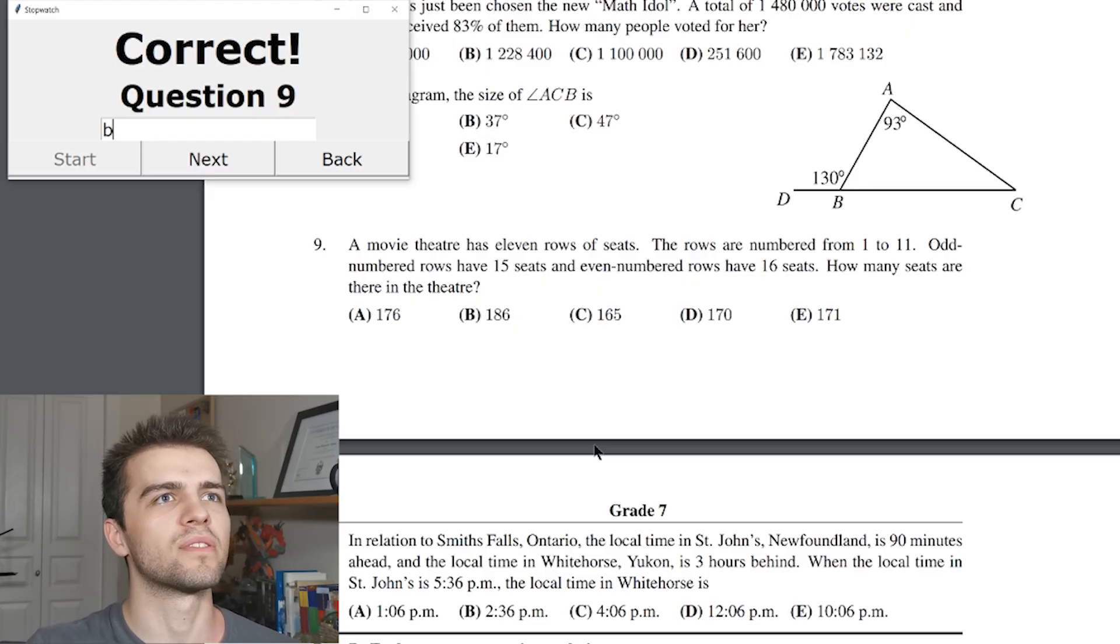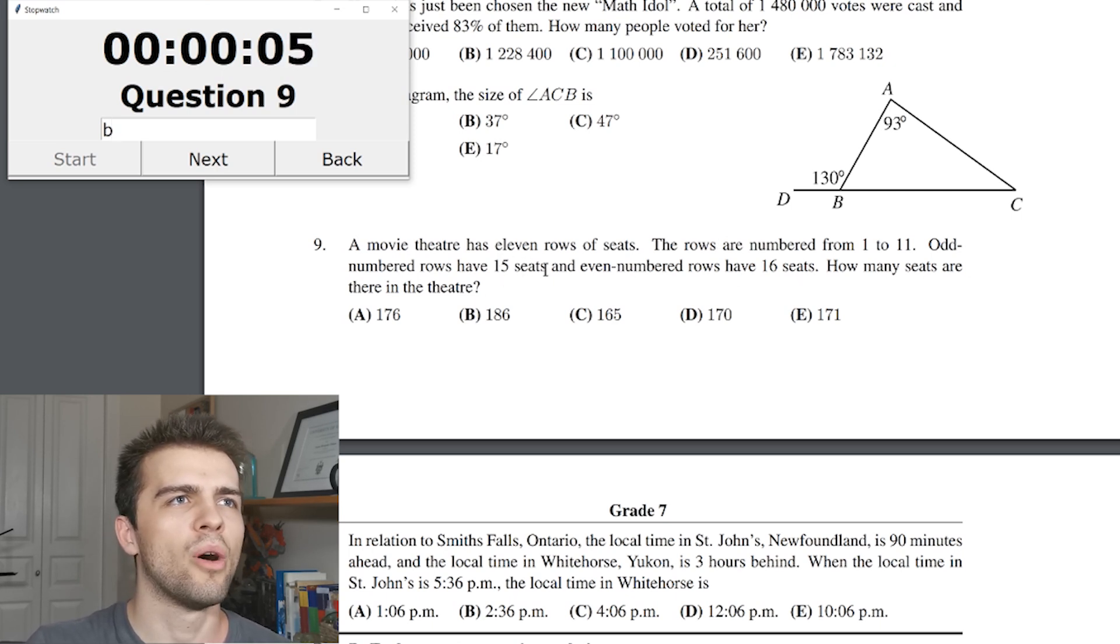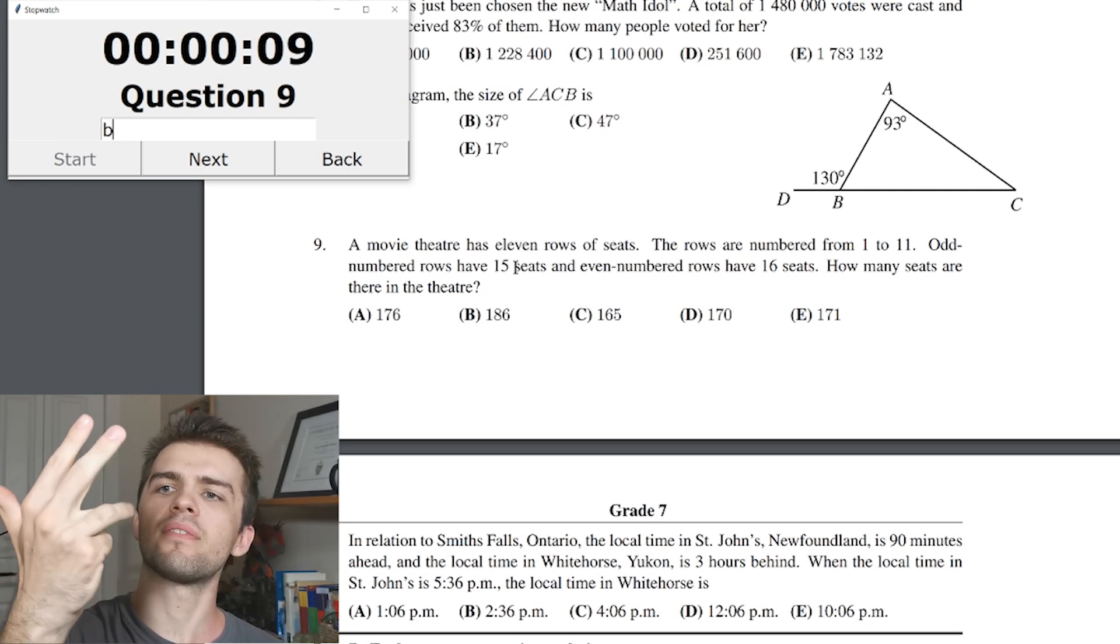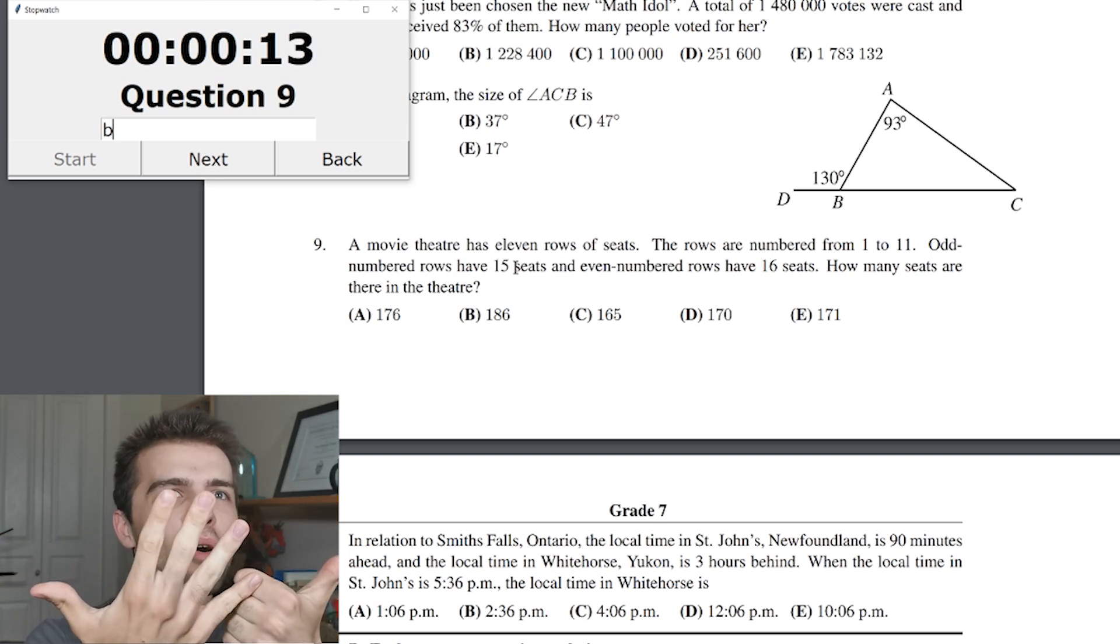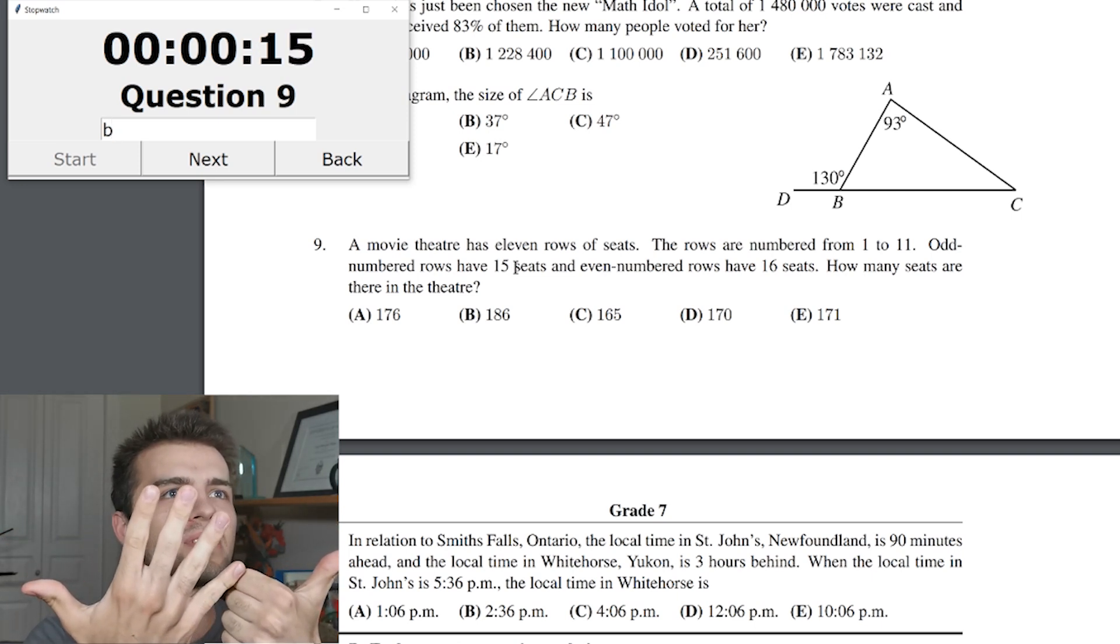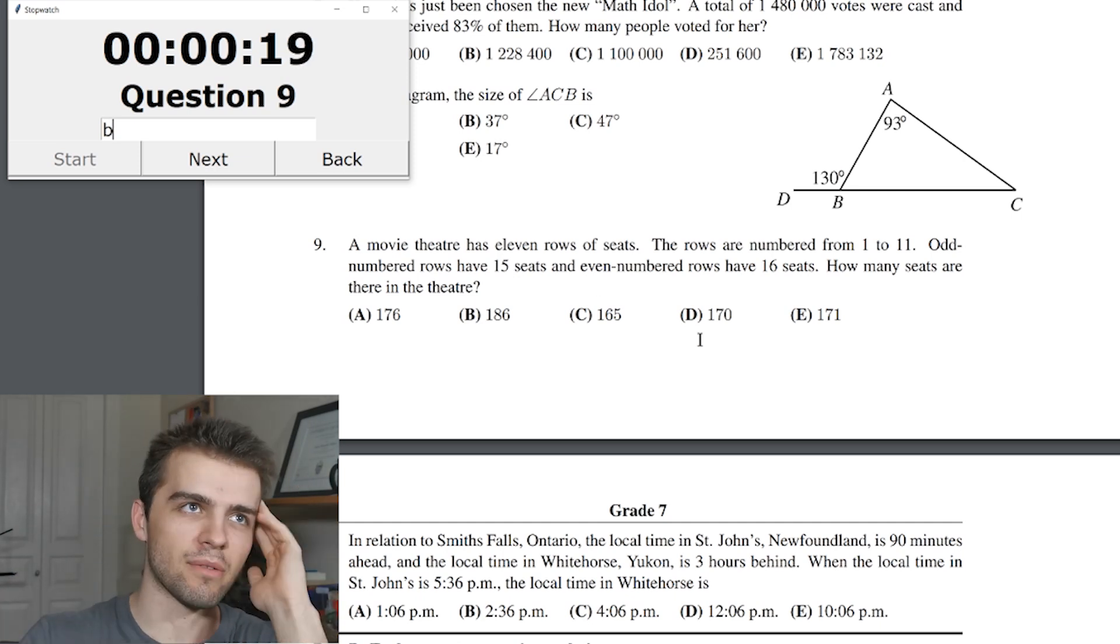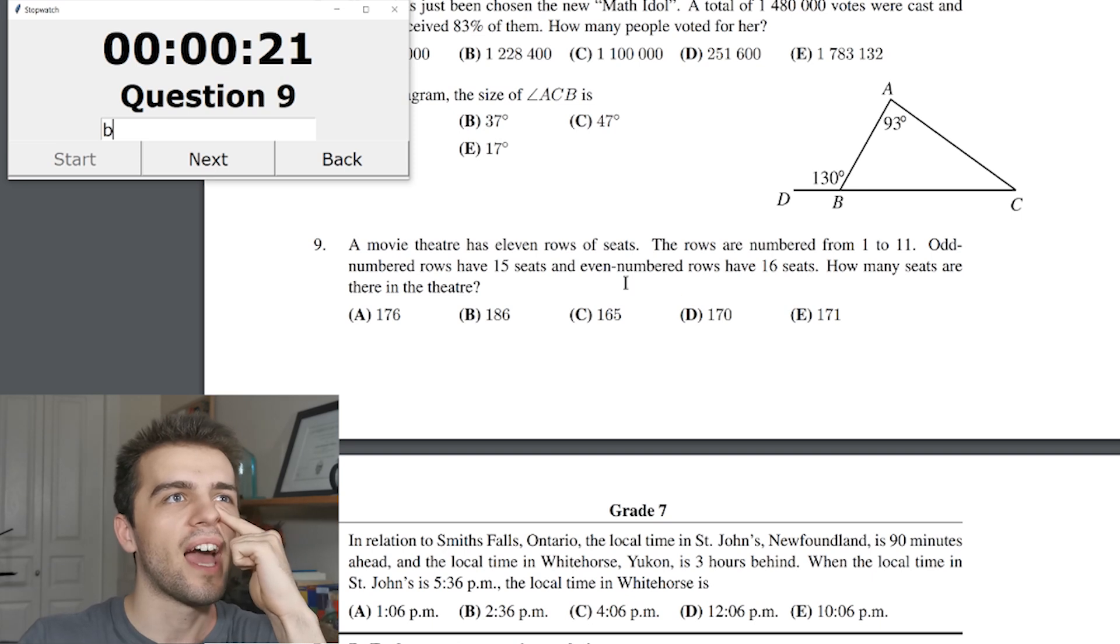A movie theater has 11 rows of seats. The seats are numbered 1 to 11. Odd number rows have 15 seats and even have 16. How many seats are there in the theater? Well, okay, odd number rows, 1, 2, 11, 1, 3, 5, 7, 9, 11. We have 6 rows times 15. 6 times 15, 60, 30, 90. So, 90. Remember that, 90, 90, 90.